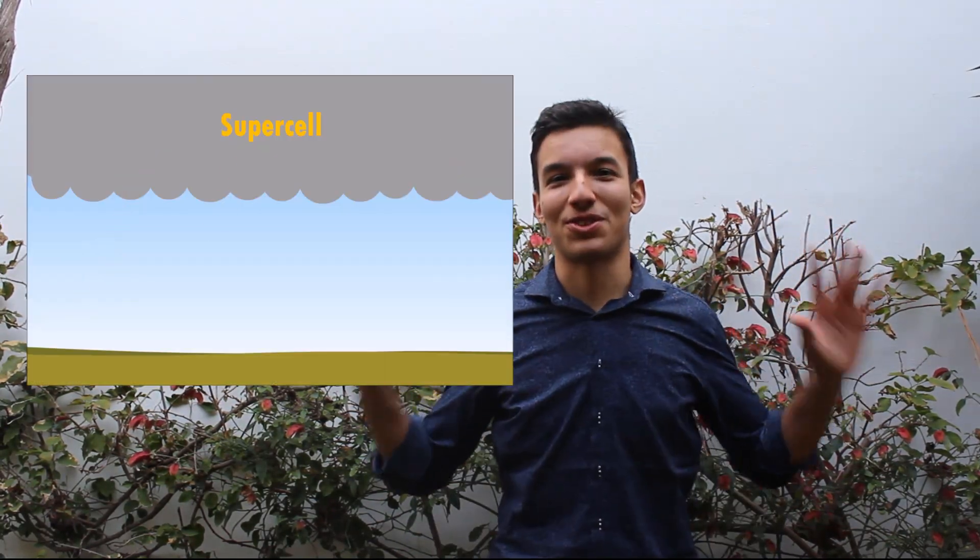This rotating air is horizontal, not vertical like a tornado, so you may be asking: how do we flip it? Well, it takes a thunderstorm — but not just any thunderstorm — a supercell thunderstorm.